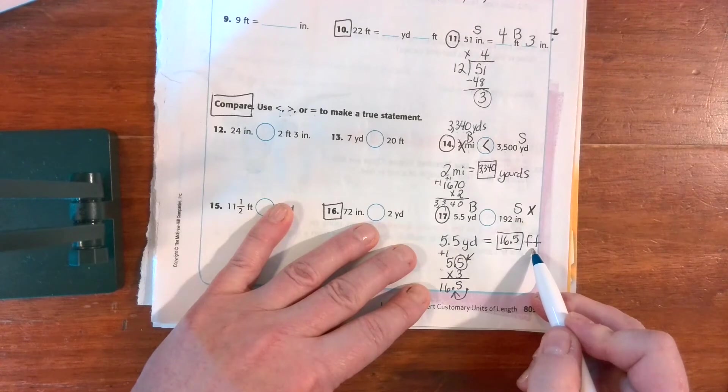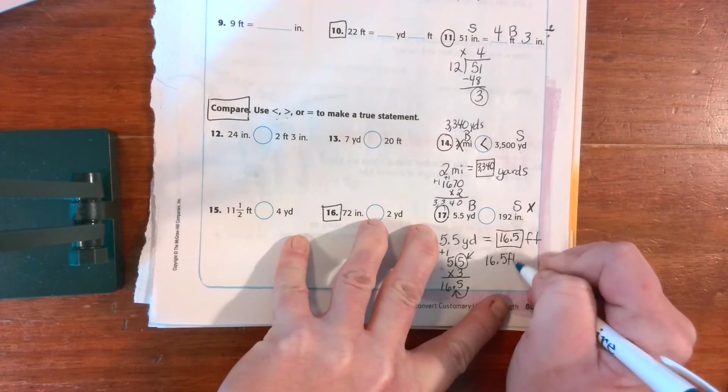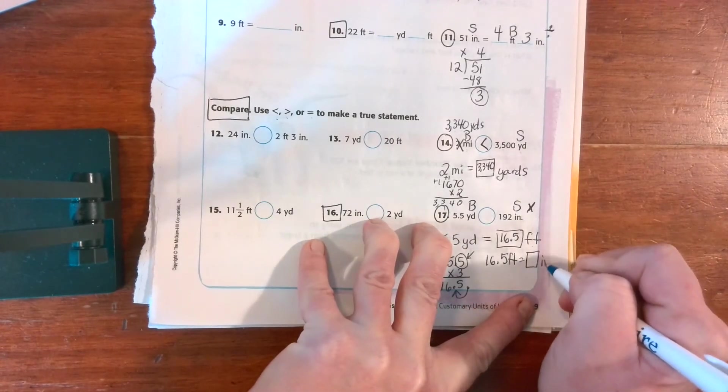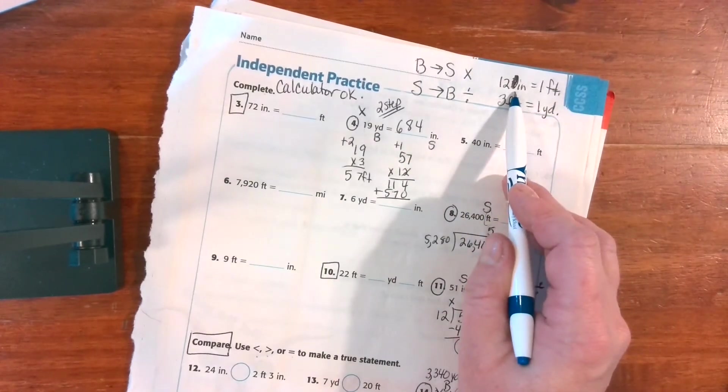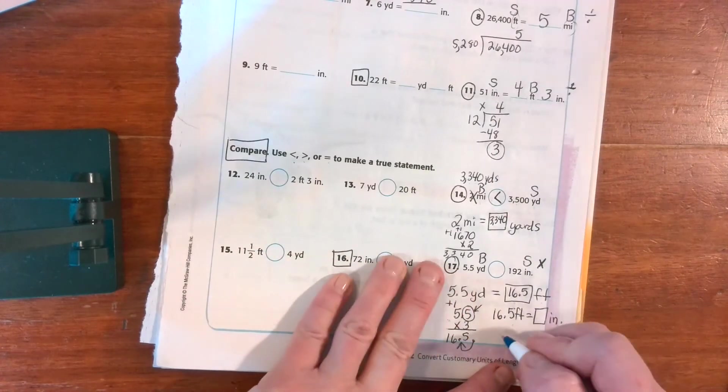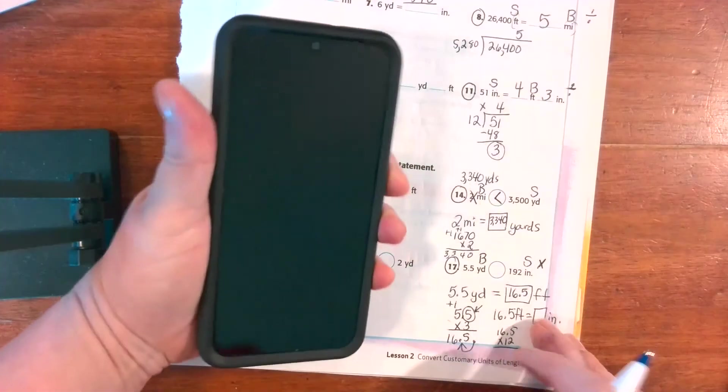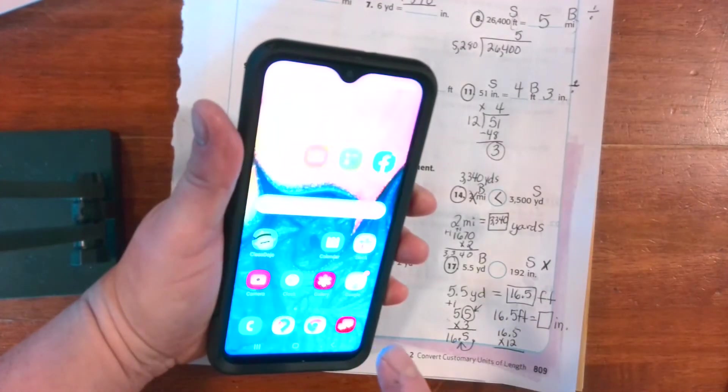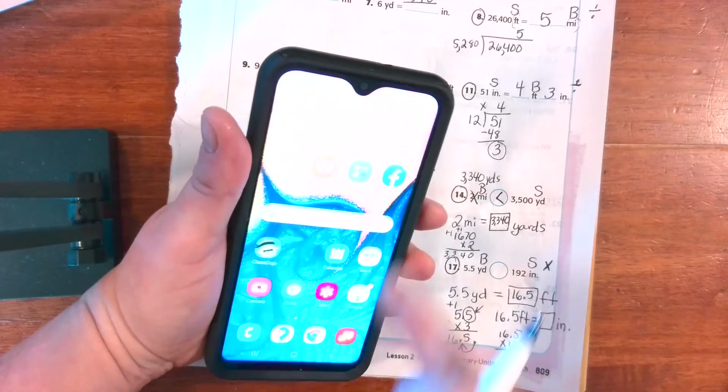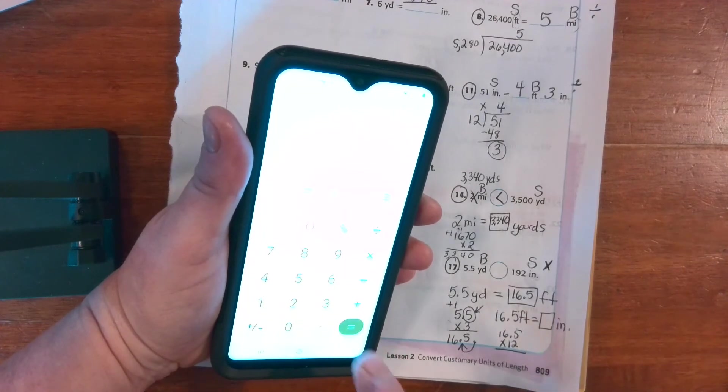But I'm only in feet, and I need inches. So now I'm going to go 16.5 feet equals how many inches. I'm still going big to small, which means I'm still multiplying. But now I'm going feet to inches, so my formula is going to be times 12. I'm going to get my calculator out on this one. 16.5 times 12 equals 198.